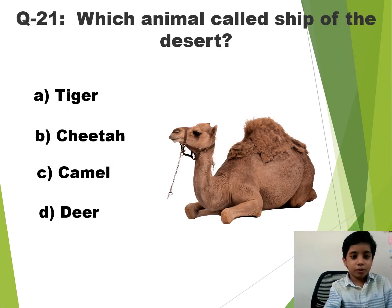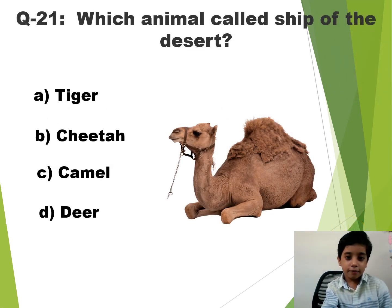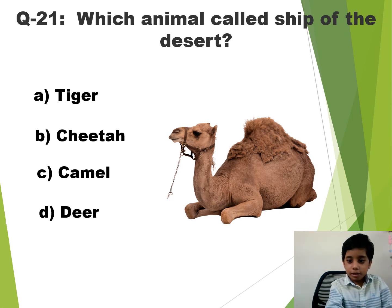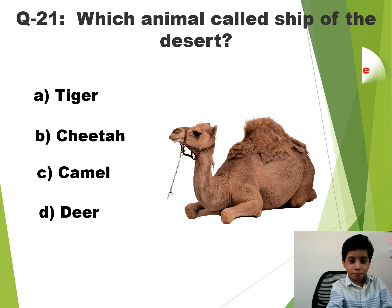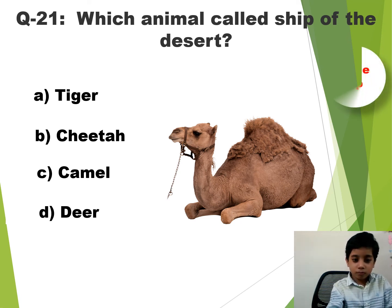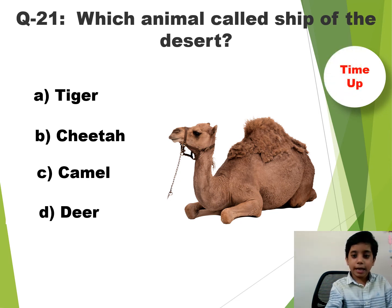Question number 21. Which animal is called the ship of the desert? The time starts now. Time up. So the answer is C — Camel.